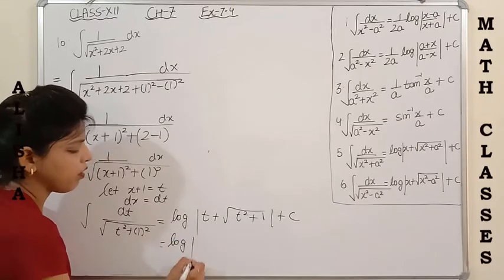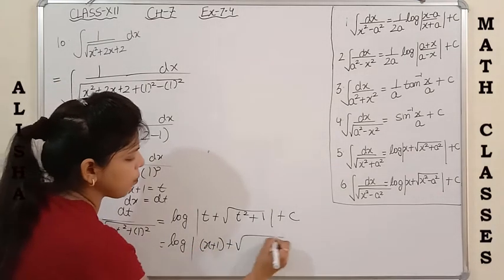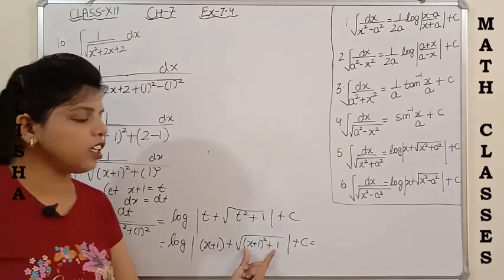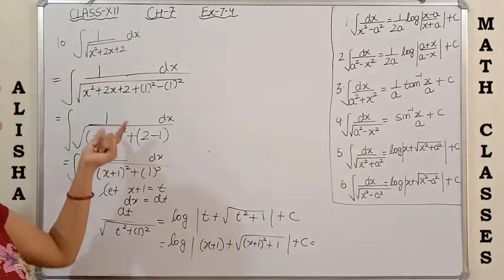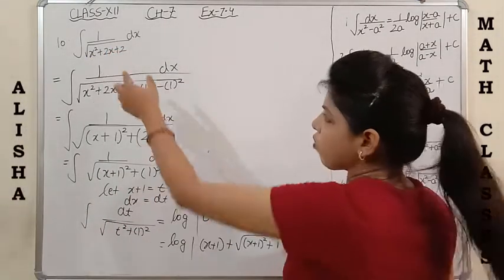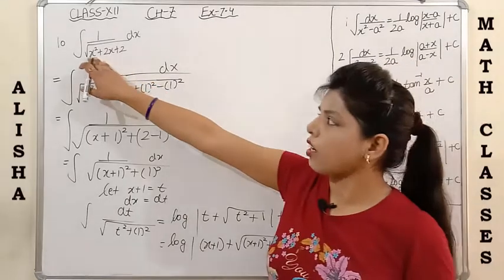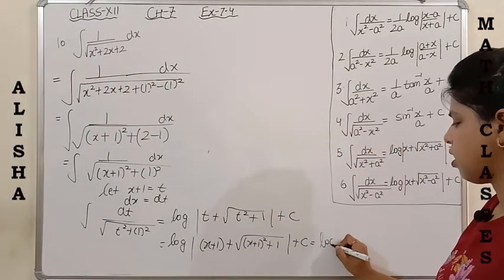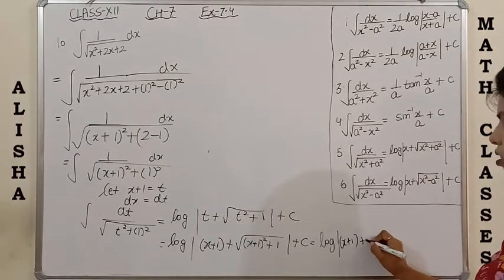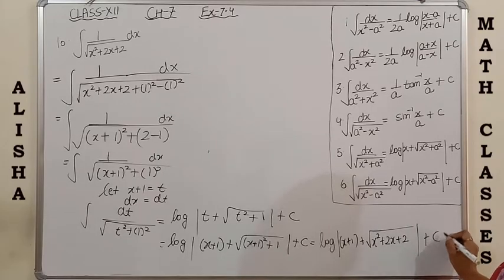Don't forget to replace the value of t. Since t = x + 1, the answer is log(x + 1 + √((x+1)² + 1)) + C. You don't need to expand it further, but when you solve (x+1)² + 1 you will get back the original expression x² + 2x + 2. So the final answer is log(x + 1 + √(x² + 2x + 2)) + C.